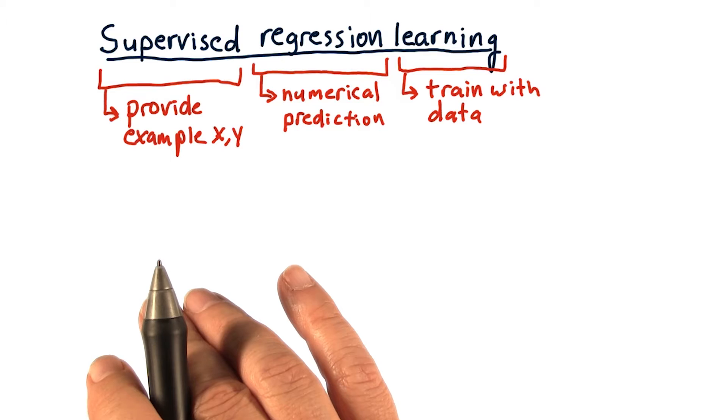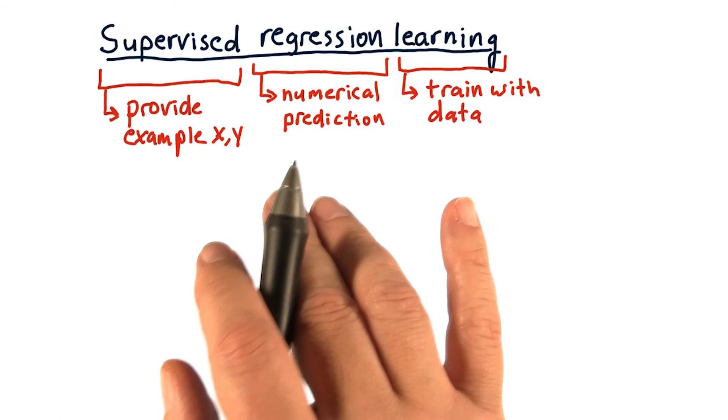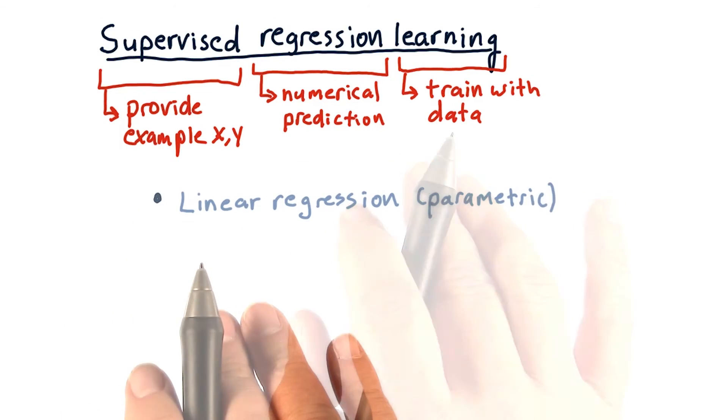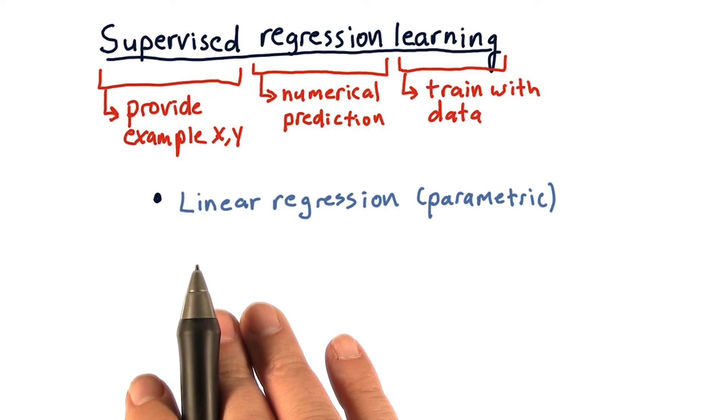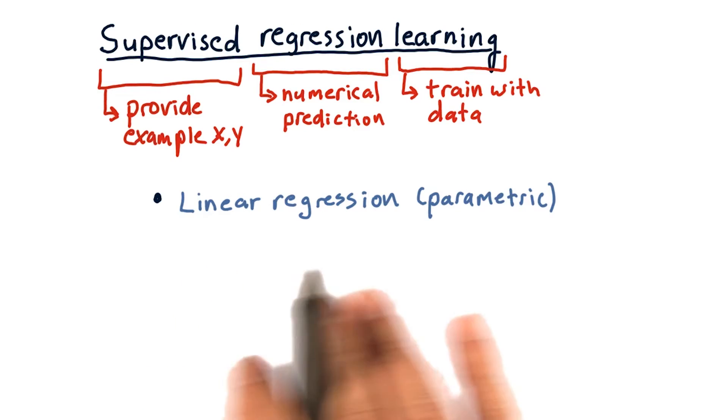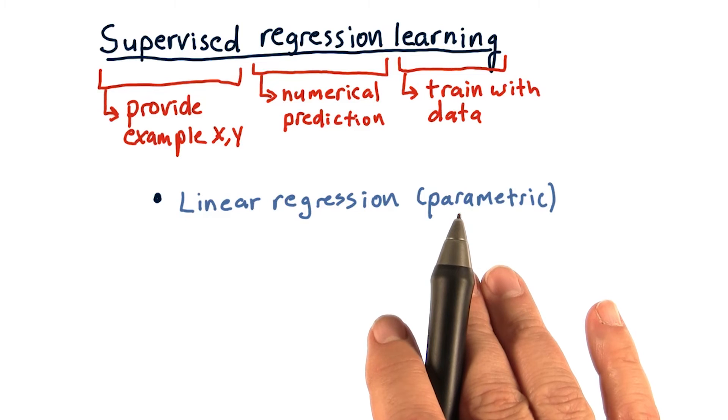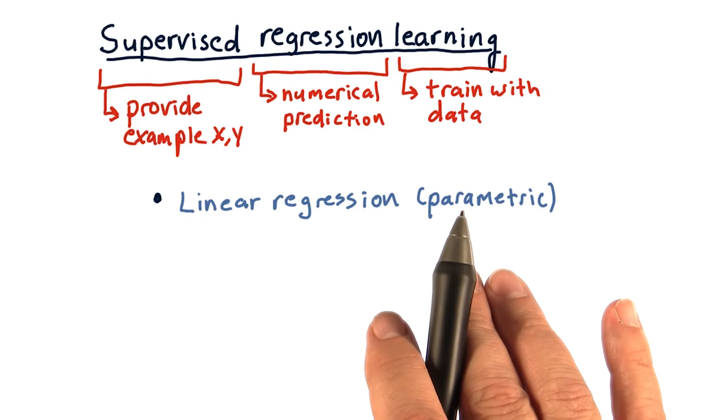There are a lot of algorithms that solve this problem and are supervised regression learning techniques. You've probably heard of linear regression and used it. Linear regression is a method that finds parameters for a model, so we call it parametric learning.